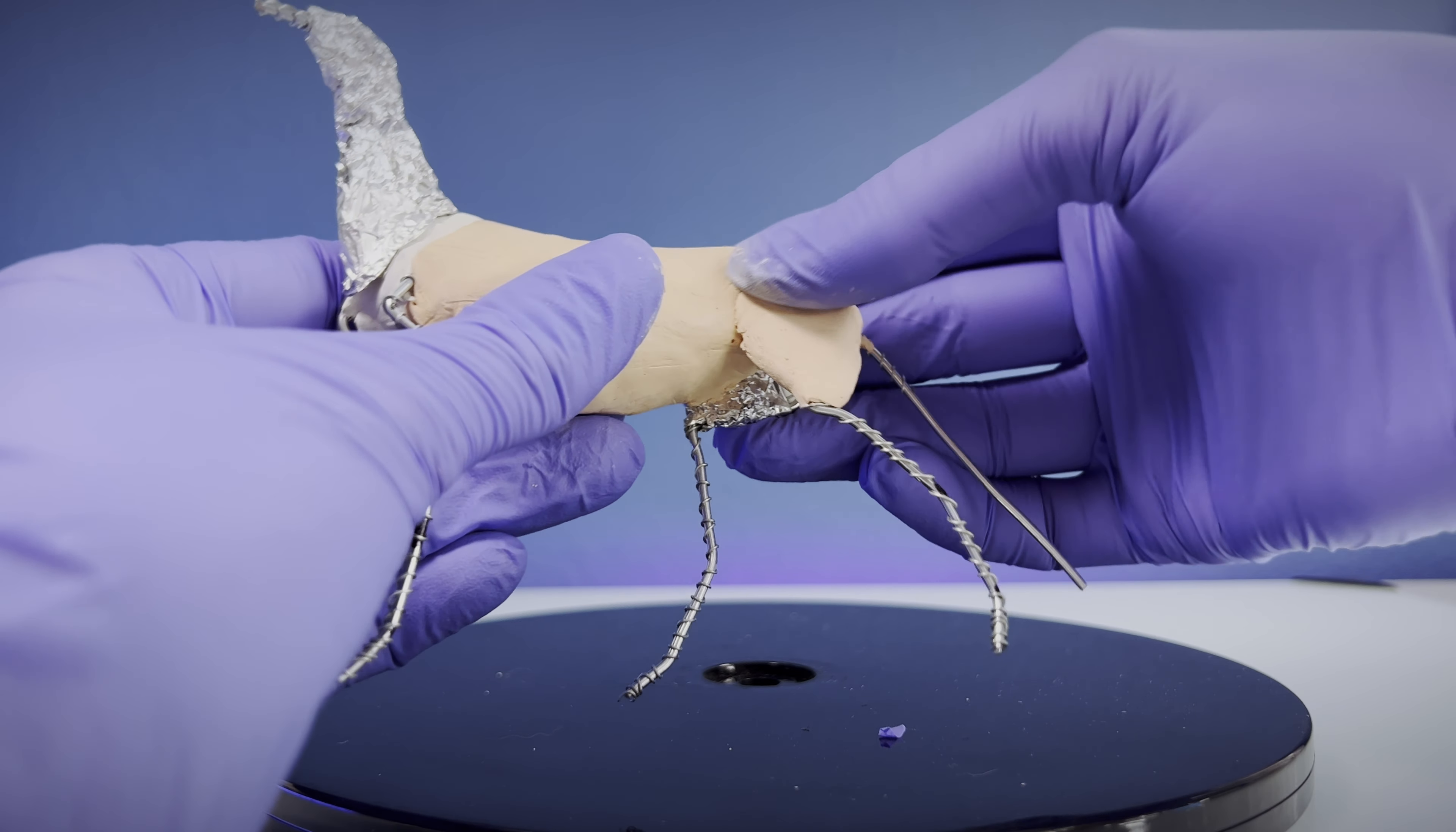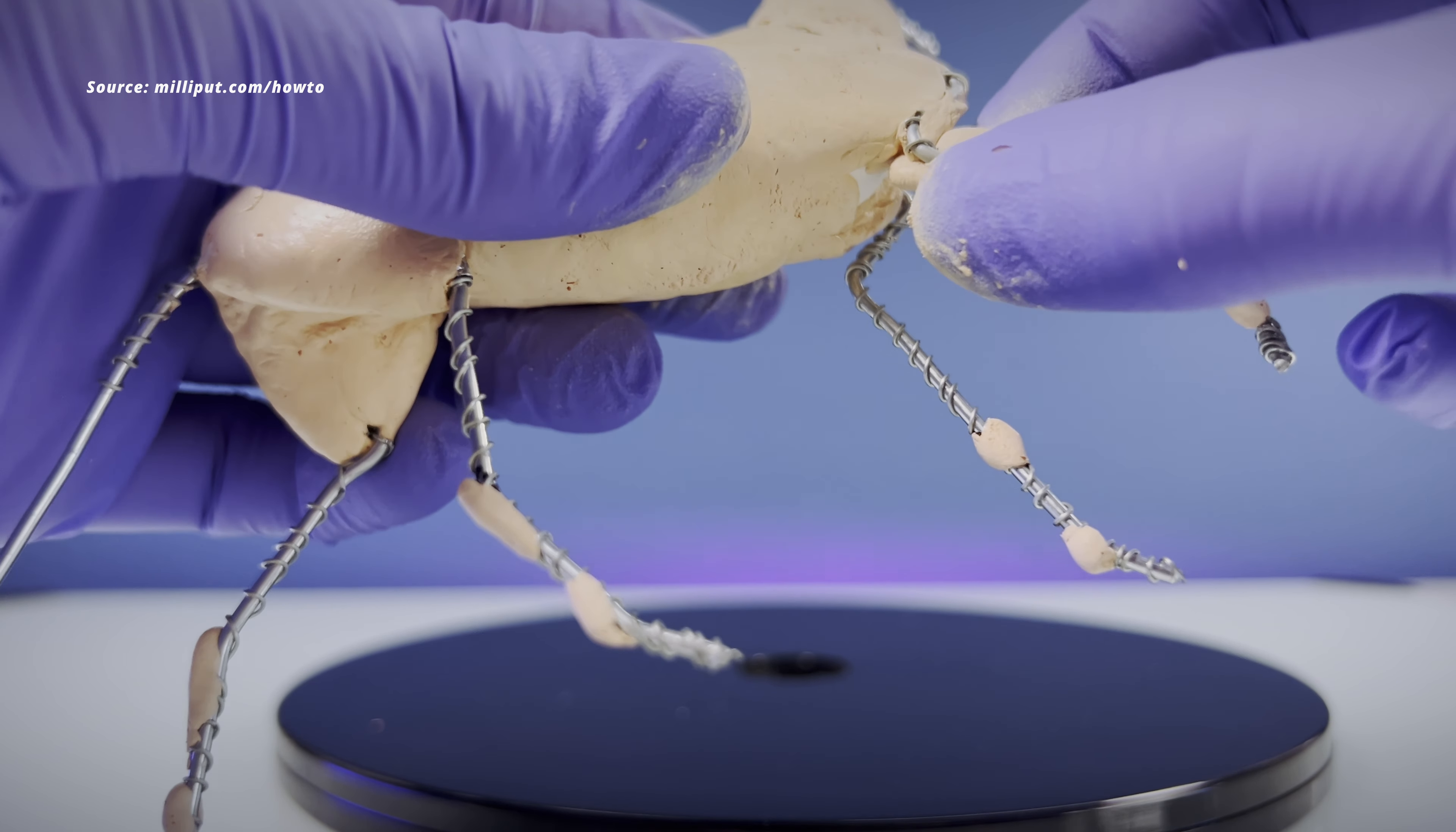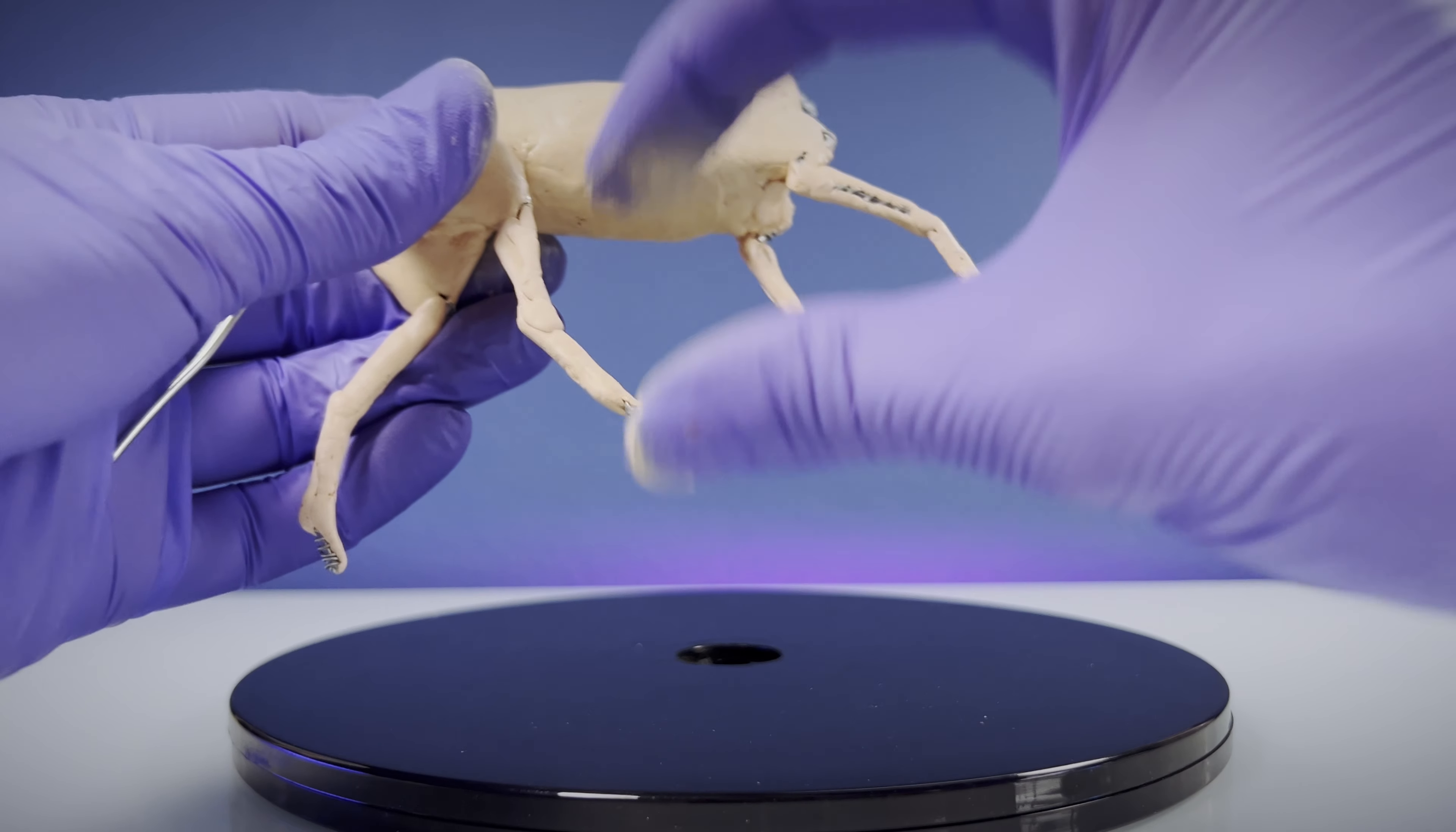Depending on how warm or cold your room is, the putty will start to harden after 30 to 60 minutes. Rock hard cure happens in 3 to 4 hours. I rarely complete a sculpture in 30 minutes myself, so I often work in small sections at a time, creating my sculptures over many days.